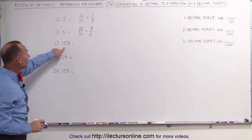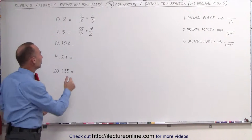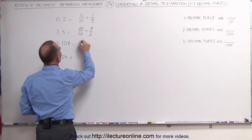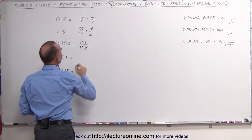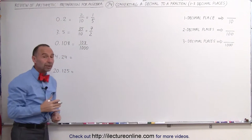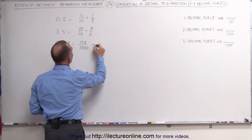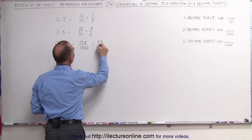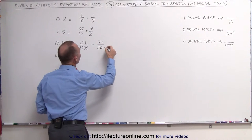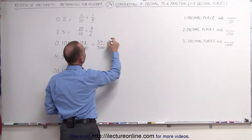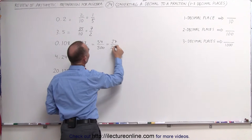Here we have three decimal places, which means we're going to write this as a fraction divided by 1,000. Get rid of the decimal point: 108 divided by 1,000. Both the numerator and denominator are even, so we can divide them both by 2. 108 divided by 2 is 54, and 1,000 divided by 2 is 500. They're still even, so we continue: 54 divided by 2 is 27, and 500 divided by 2 is 250.